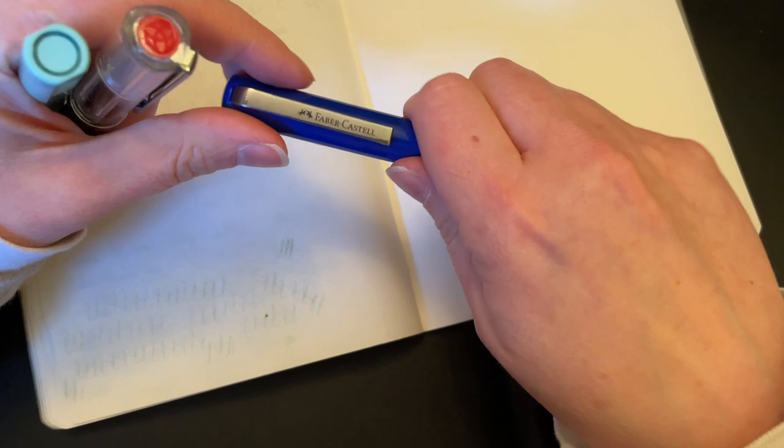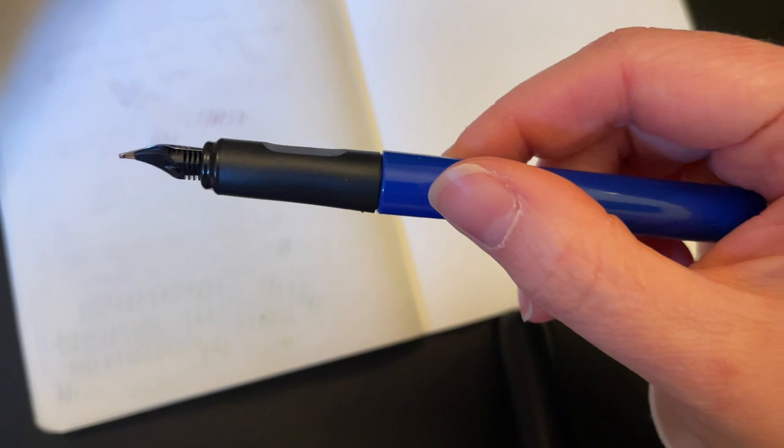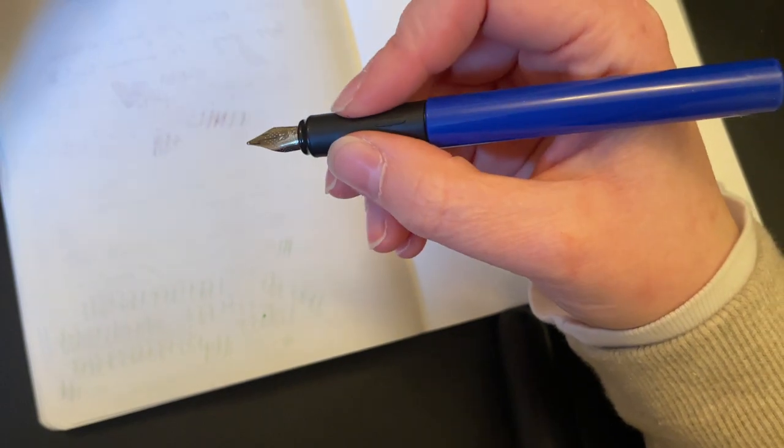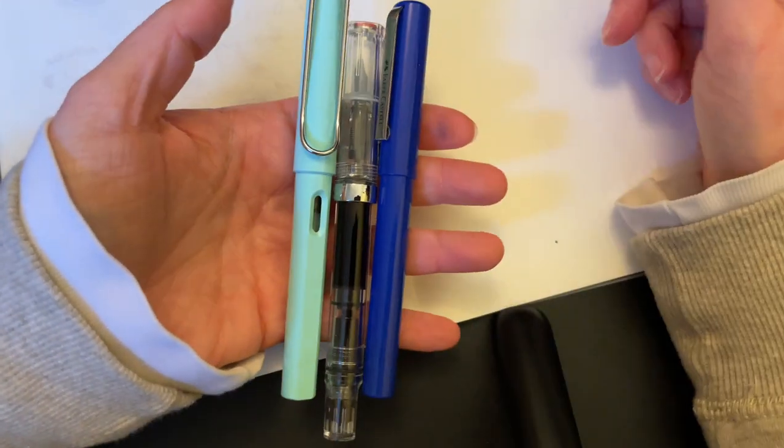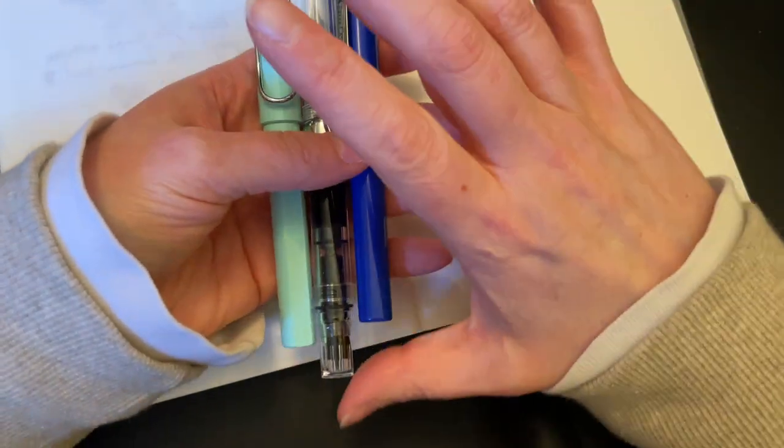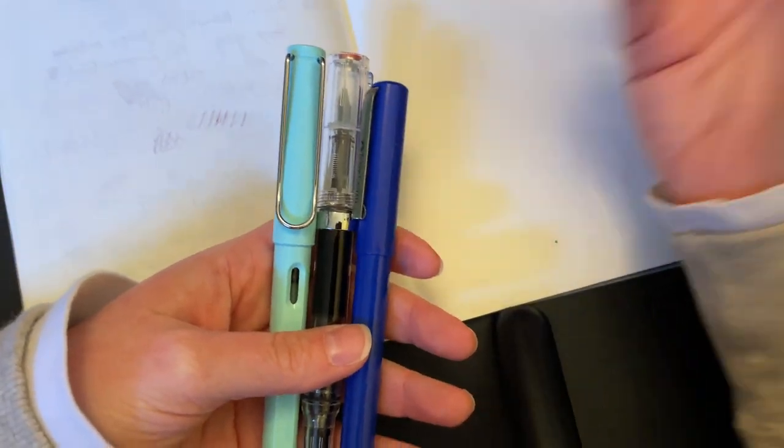The Faber-Castell Student is probably very unknown, or at least certainly less known than the other two, but definitely has that grip as well. Battle of the pens - which triangle grip reigns supreme?